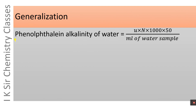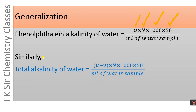This equation can be generalized: Phenolphthalein alkalinity of water = (U × normality of H2SO4 × 1000 × 50) / volume of water sample in ml. Similarly, total alkalinity of water sample = ((U + V) × normality of H2SO4 × 1000 × 50) / volume of water sample in ml.